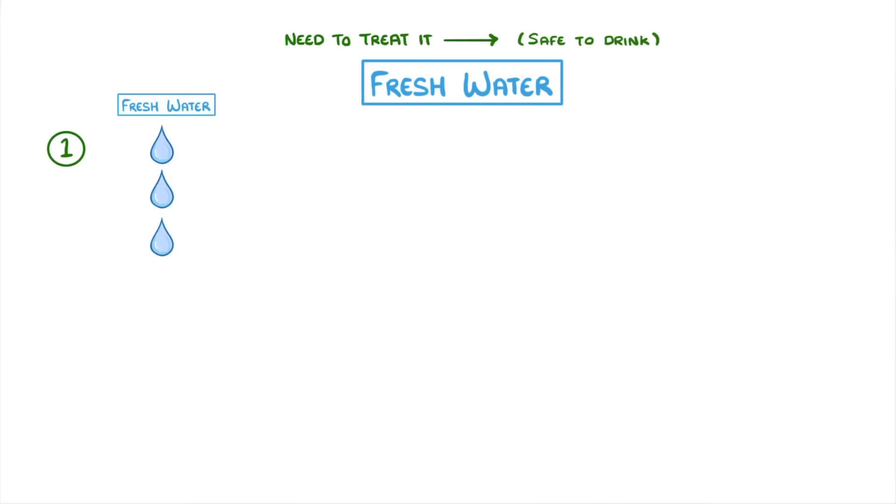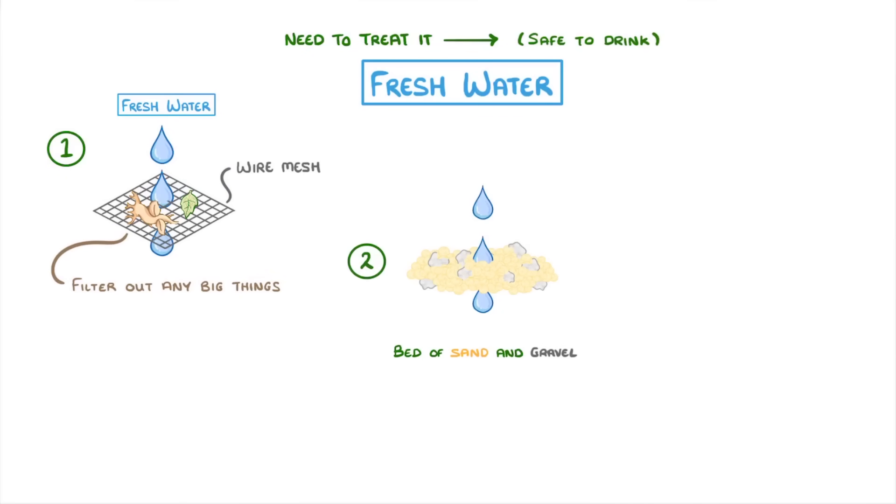First we take our fresh water and pass it through a wire mesh to filter out any big things like twigs. Next we pass it through a bed of sand and gravel which filters out any other smaller solid bits.